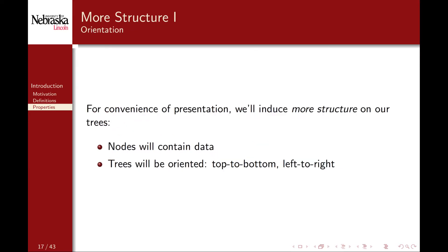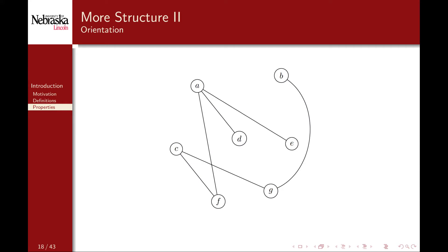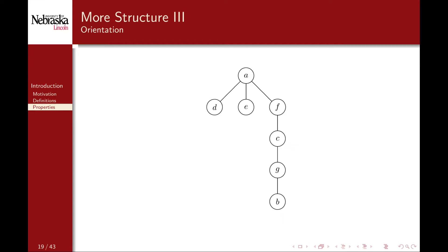Still, we'll want to induce even more structure, mainly for convenience, in order to develop a full data structure. In particular, we'll make it so that nodes in our tree store data, and we'll orient our trees top to bottom and left to right. To illustrate this, consider the prior example. Imagine picking up the tree by the node A and shaking it, allowing gravity to pull down the other nodes attached by edges. The result would look something like this.